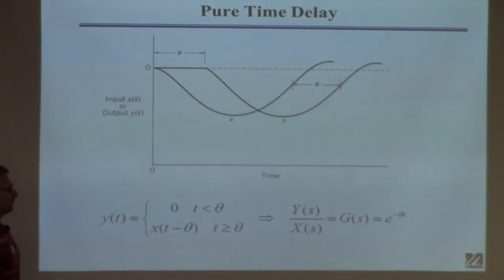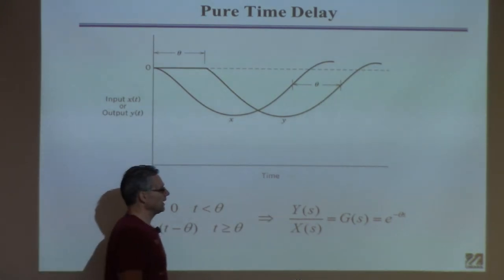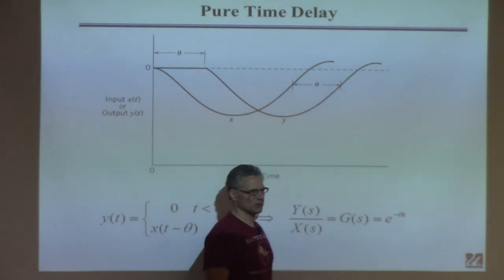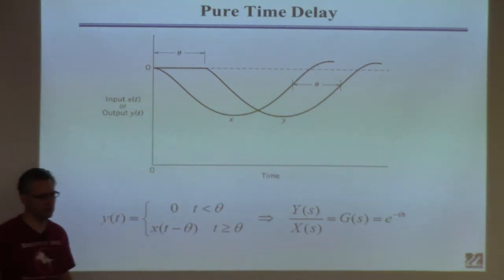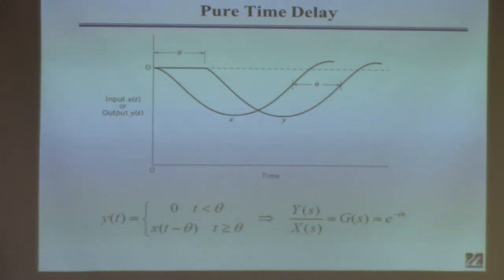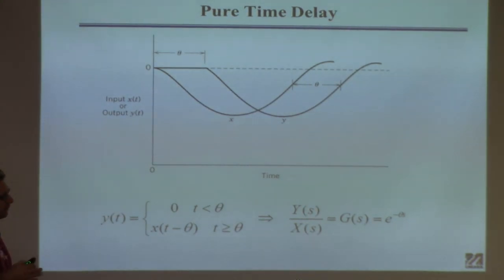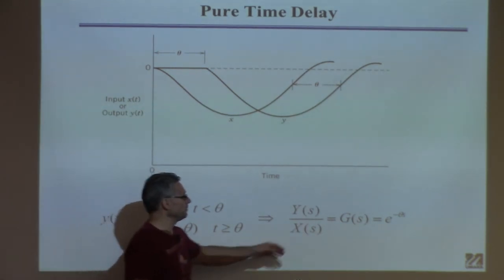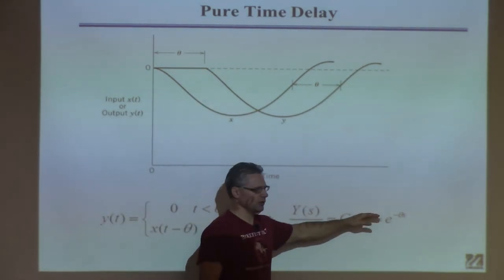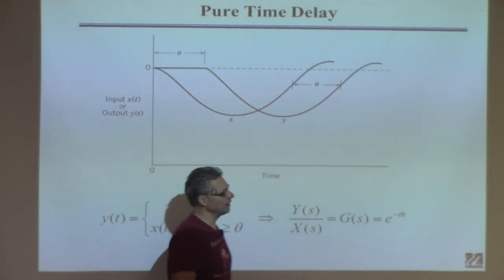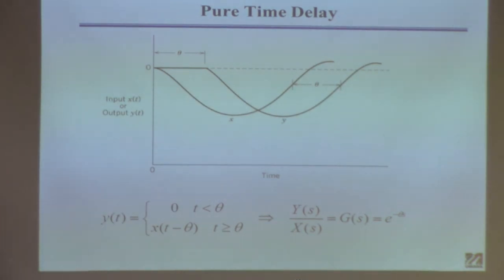One thing we don't like about time delays from a mathematical standpoint is that e to the minus theta·s is not a rational function — it can't be expressed as a ratio of two polynomials. We often use a rational approximation of this time delay because many of the methods we use require G to be simply a ratio of two polynomials with no time delay. So I'll show you a couple of ways to approximate the time delay by rational functions so that the tools we develop later can be applied.